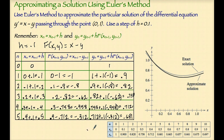This table provides ordered pairs up through step 10 of the process, and these ordered pairs generate the approximate solution curve. Notice how closely the curve produced by Euler's method approximates the exact solution curve.